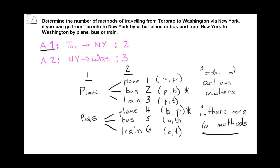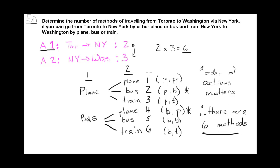Some people might have noticed the connection. Could I have just said there are two ways to do my first action and three ways to do my second action, and simply done two times three equals six? That was my answer — six methods. Could I just have done that? And the answer is yes.